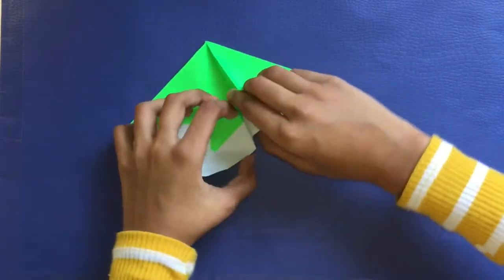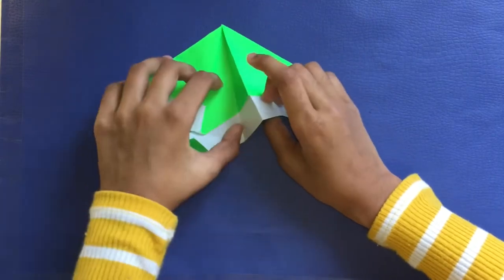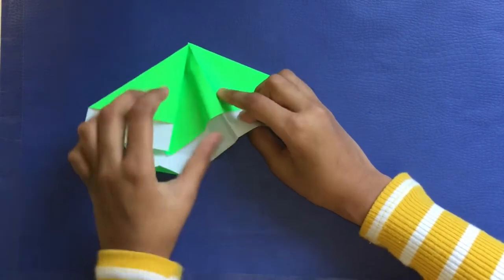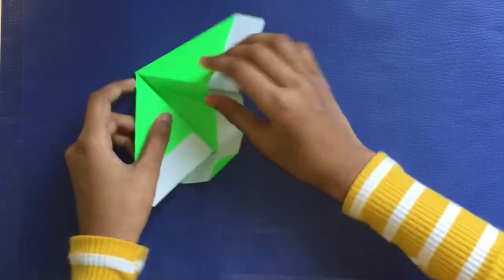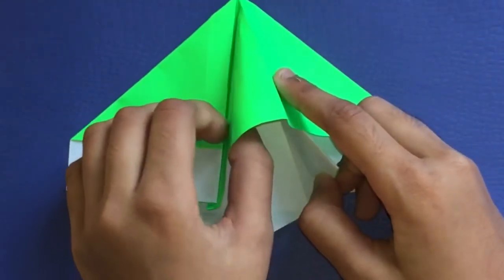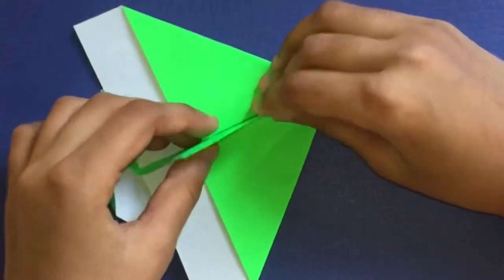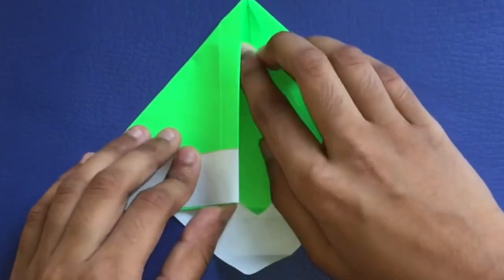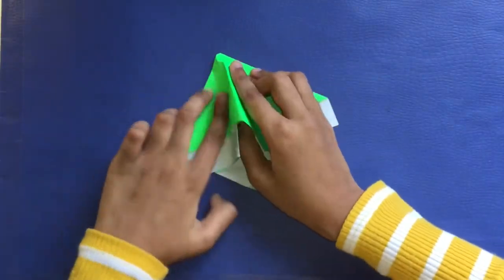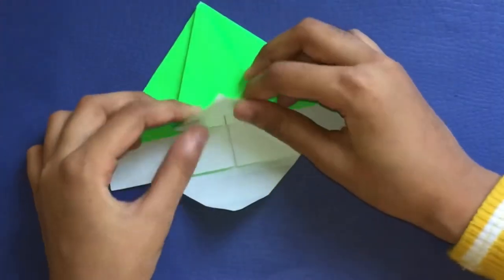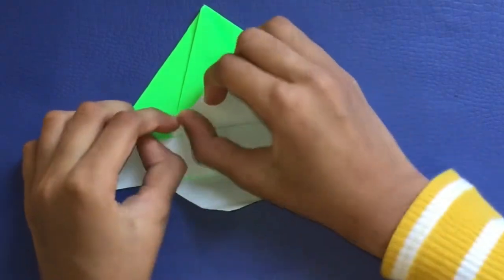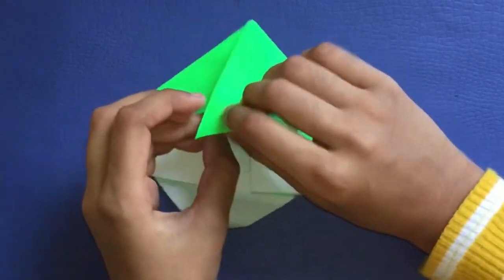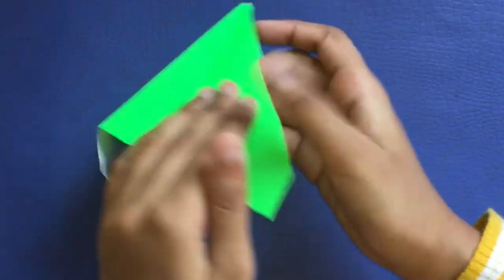We're going to make a squash fold. So open this up, you're going to make this layer come out and make it mountain on this crease. Fold it down so it closes and folds down like this. Fold this up, tuck it inside, then turn it over.